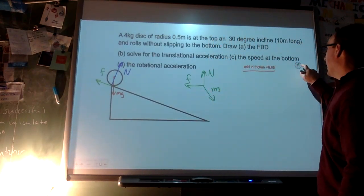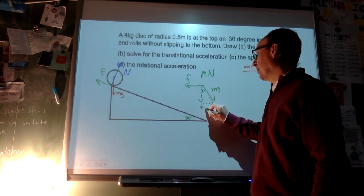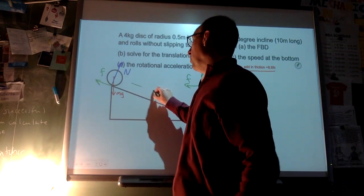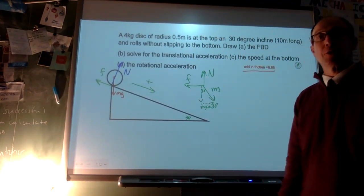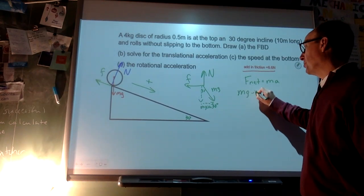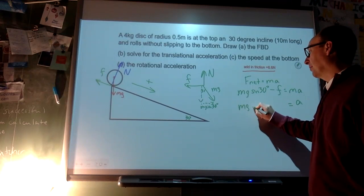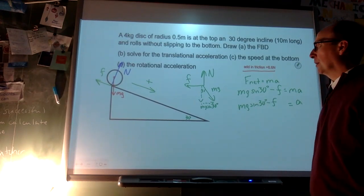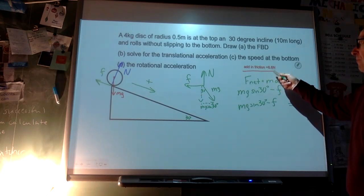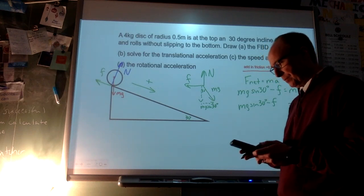Rotating the diagram: the 30° incline angle is the upper angle, so mg sin30 acts down the incline. Taking down-incline as positive, F_net = ma gives: mg sin30 − friction = ma. mg sin30 = 20 N; 20 − 6.6 = 13.4 N; 13.4 ÷ 4 kg = 3.35 m/s².